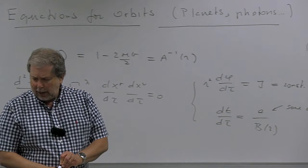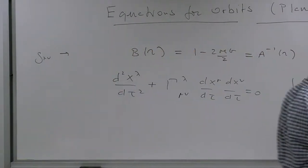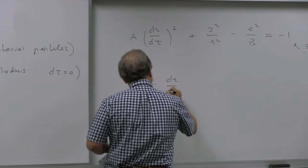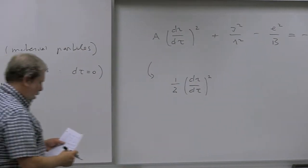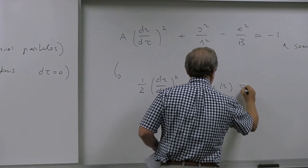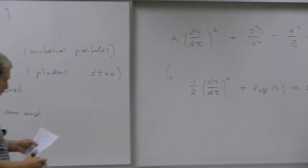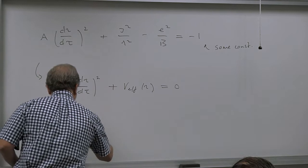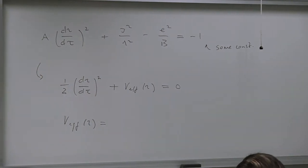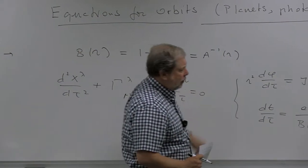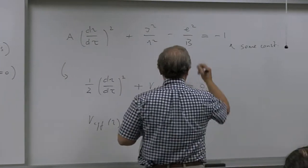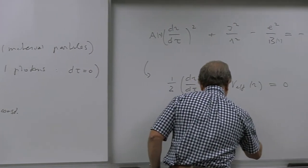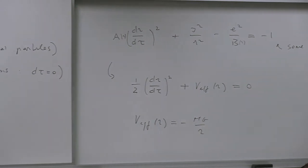We can rewrite the radial equation in terms of an effective potential: (1/2)(dR/d tau)^2 + V_eff(R) = constant. The effective potential for the Schwarzschild metric is V_eff(R) = -MG/R + j^2/(2R^2) - MGj^2/R^3 + (e^2 - 1)/2. The first term is the standard Newtonian potential, the second is the centrifugal barrier, and the third is a new relativistic correction.